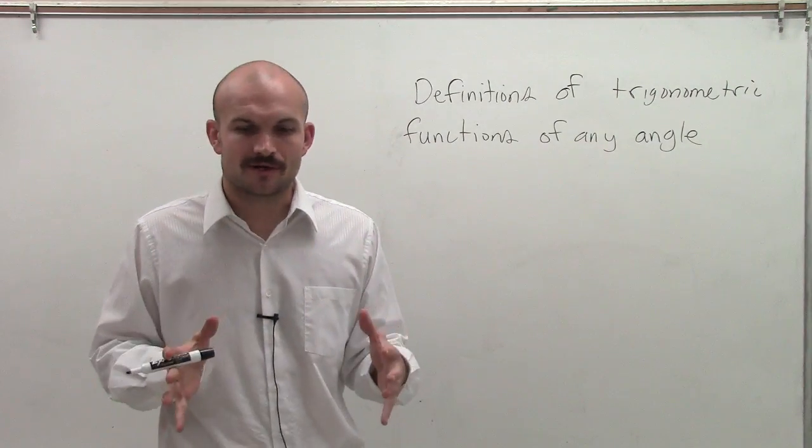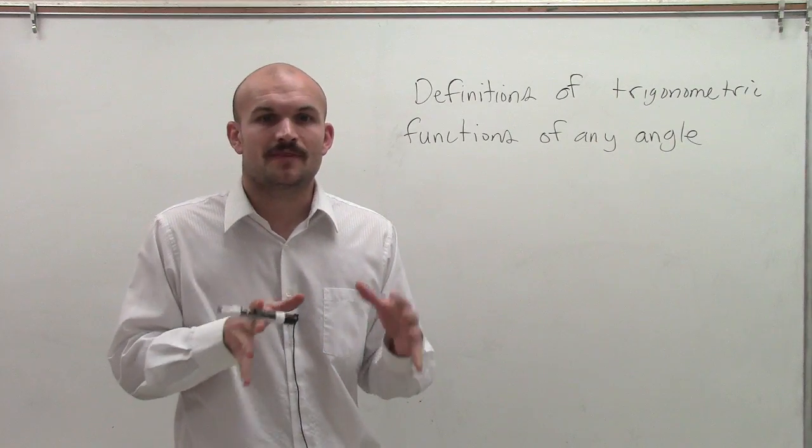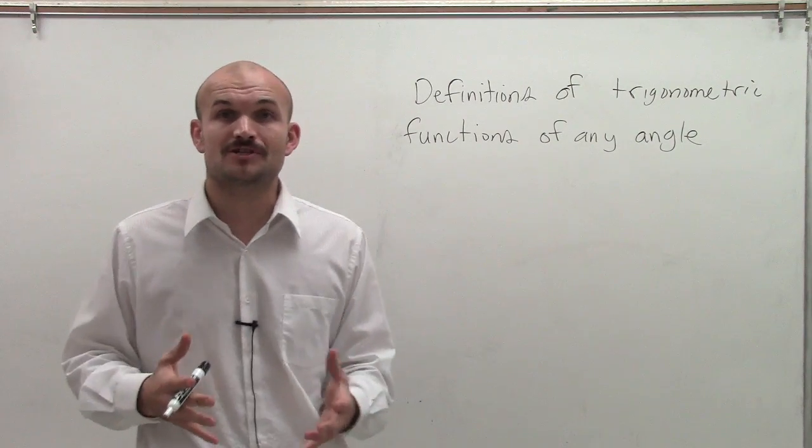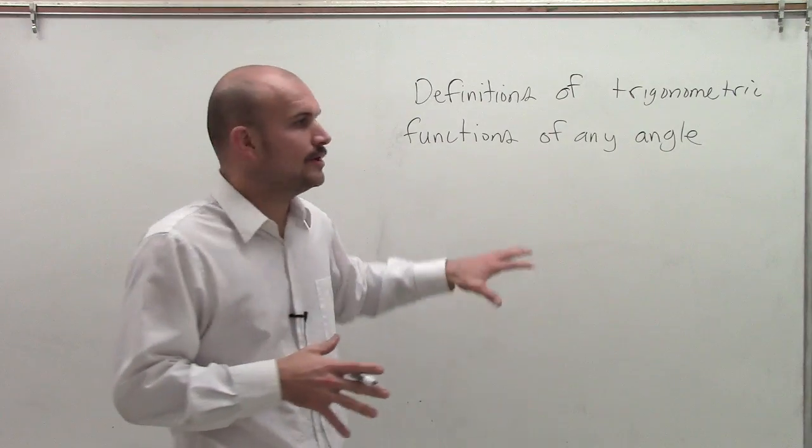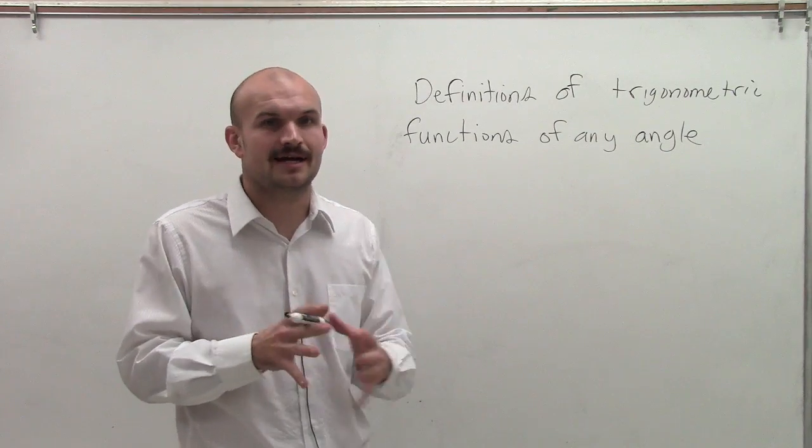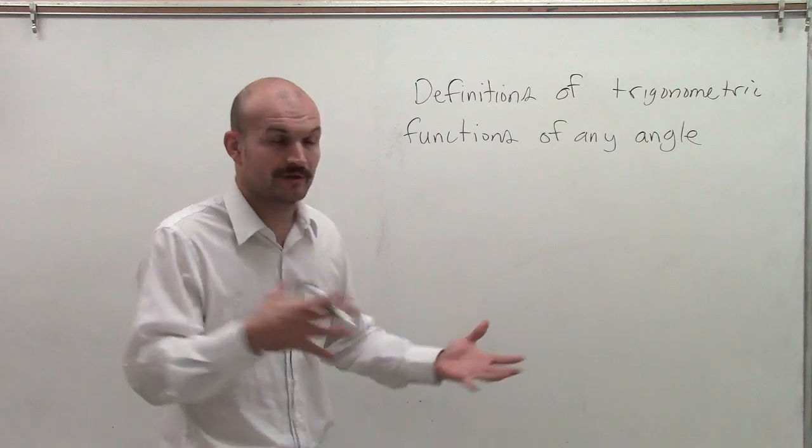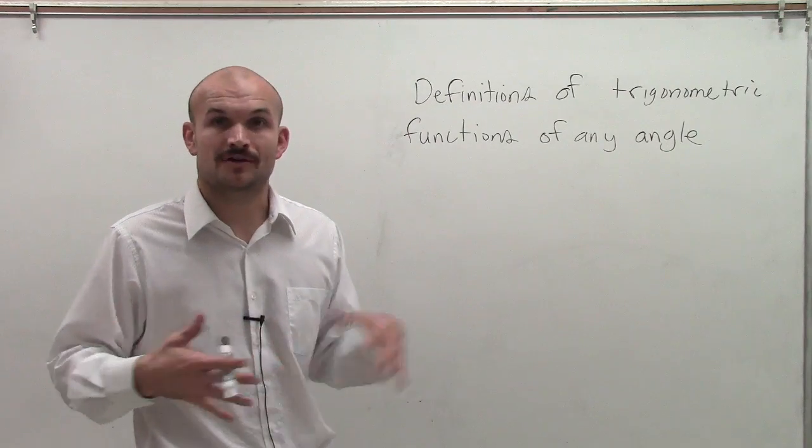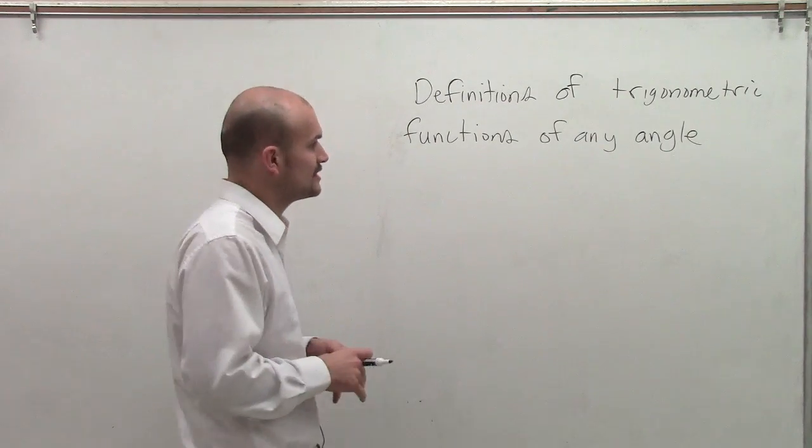The reason why we use those angles is because the value of trigonometric functions at those angles we could find by using geometry with our special triangles: 45-45-90 and 30-60-90 triangles.